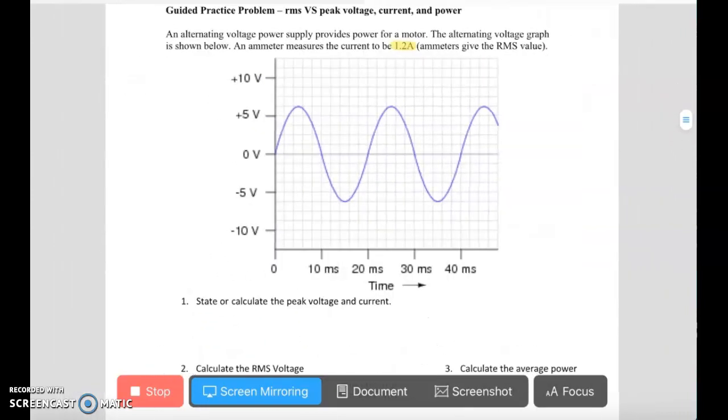And then down here in the graph, we have time on the x-axis in milliseconds and voltage on the y-axis in volts. So part one of this question asks us to state or calculate the peak voltage and the peak current.